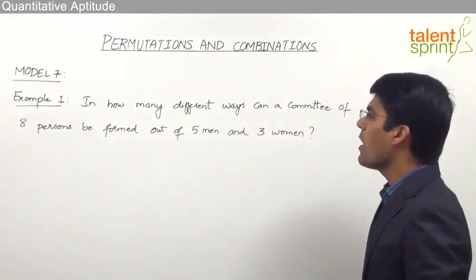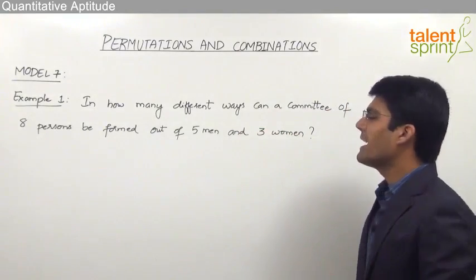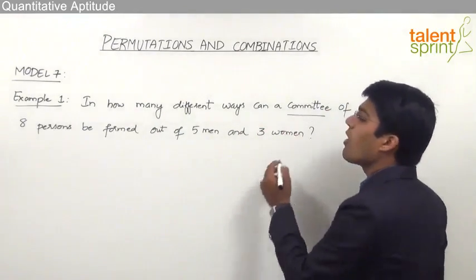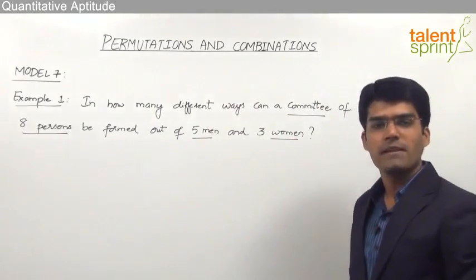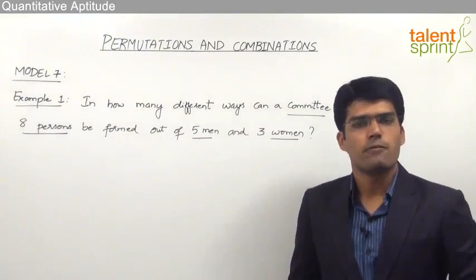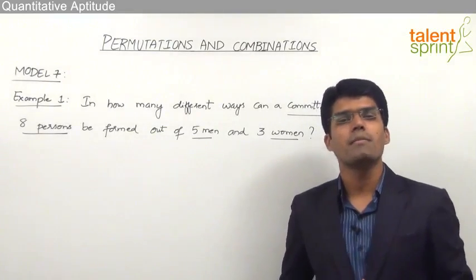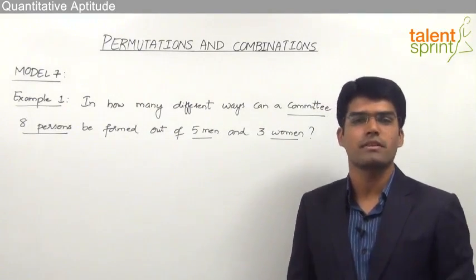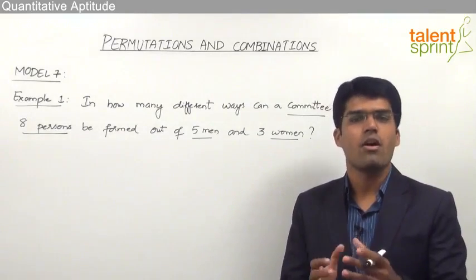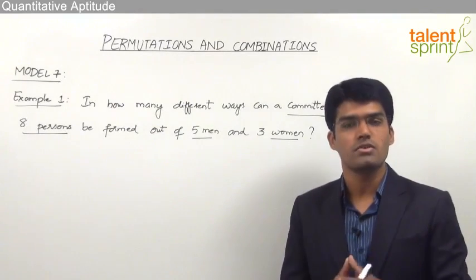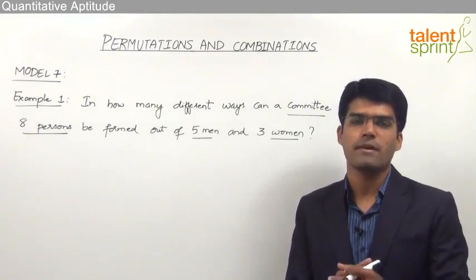The first example is: in how many different ways can a committee of eight persons be formed out of five men and three women? Forming a committee or a group of persons is considered to be combinations, because only selection is required — arrangement is not required, or the order in which the persons are selected doesn't make a difference. Since order is not important, this is combinations, given as nCr = n factorial by (n minus r) factorial into r factorial.